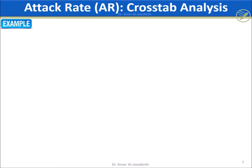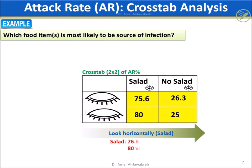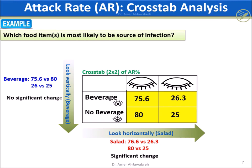Now let's analyze the cross-tab. Looking horizontally at the salad and ignoring beverage: the AR for those who ate salad is 76%, compared to 26% for those who didn't — and similarly 80% versus 25% — showing a significant difference. Looking vertically at the beverage and ignoring salad, there is no significant difference: AR for beverage drinkers is 76% compared to 80% for non-drinkers, and similarly 26% versus 25%.